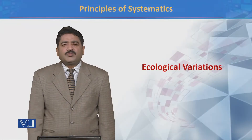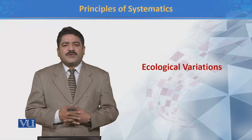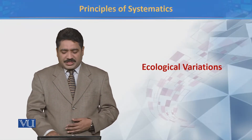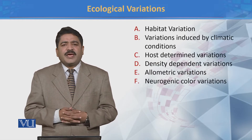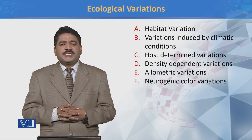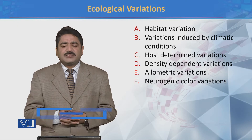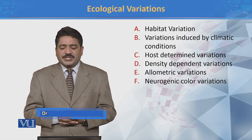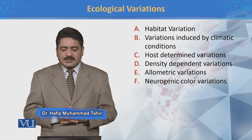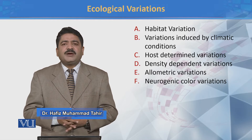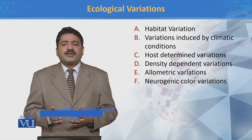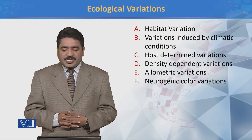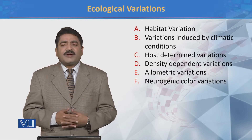In this module we will discuss different types of ecological variations. We can classify ecological variations into habitat variations, variation induced by climatic conditions, host determined variations, density dependent variations, allometric variations, and neurogenic color variations.